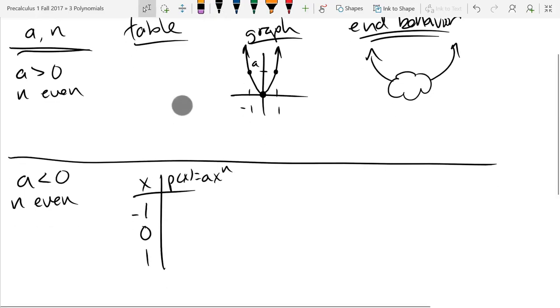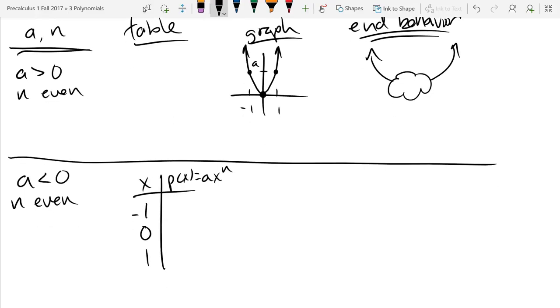So when I plug in negative 1, so I have negative 1 to an even power gives me positive 1. So in this case, when I plug in negative 1, I'll have a negative 1 to the n, which is regular a. And the next one, a times 0 to the n, which is 0. And the last one, a times 1 to the n equals a.